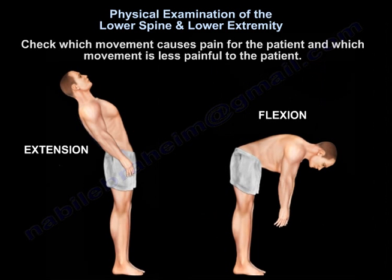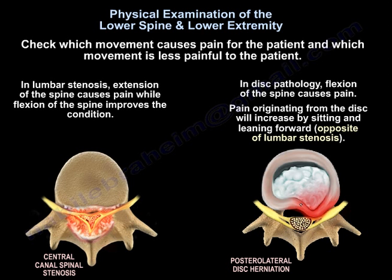Check which movement causes pain for the patient and which movement is less painful. For example, in lumbar stenosis, extension of the spine causes pain, while flexion of the spine improves the condition. In disc pathology, flexion of the spine causes pain, and pain originating from the disc will increase by sitting and leaning forward. This is the opposite of lumbar stenosis.